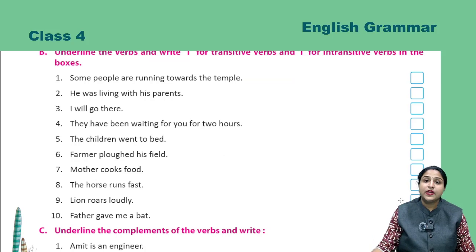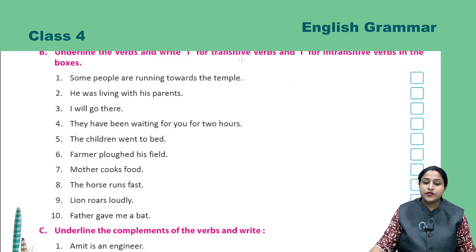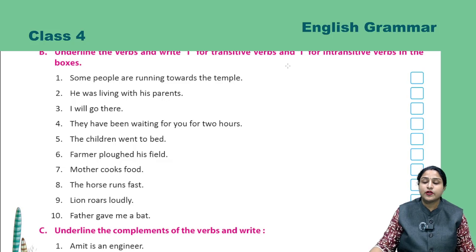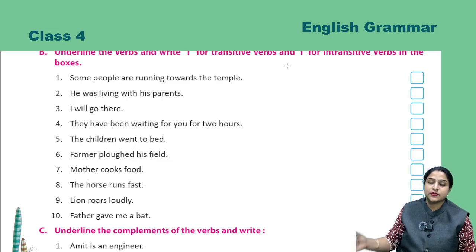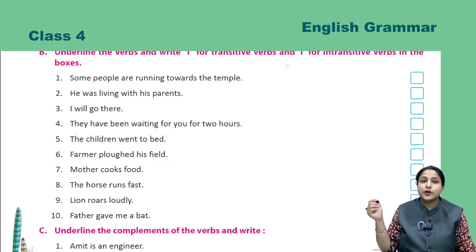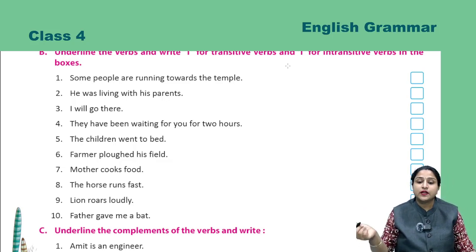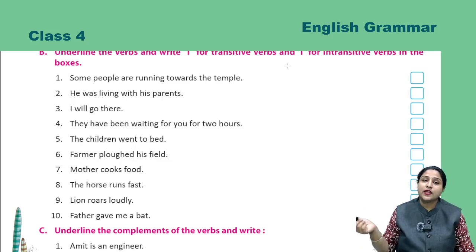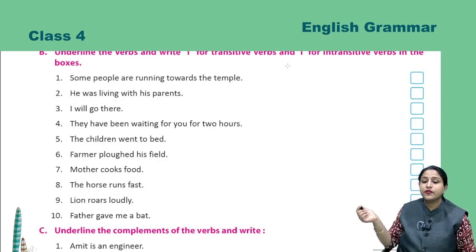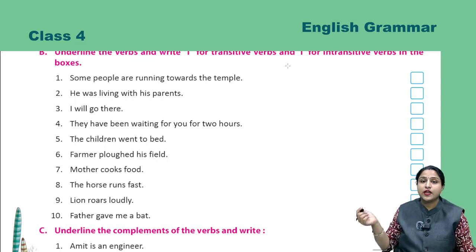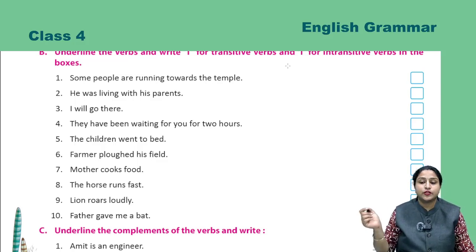Now Exercise B: underline the verb and write T for transitive verbs and I for intransitive verbs in the box. You need to underline the verbs and indicate whether they are transitive (T) or intransitive (I).